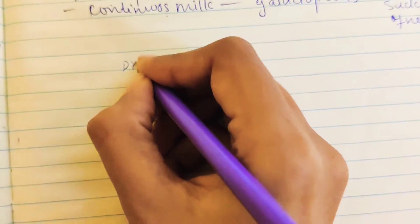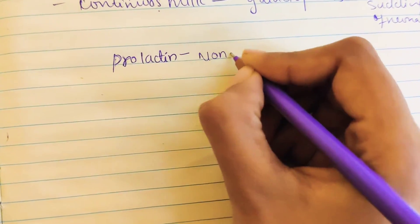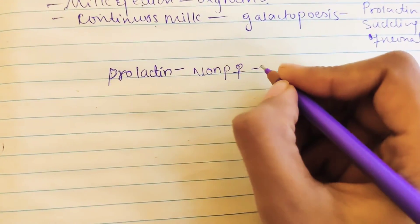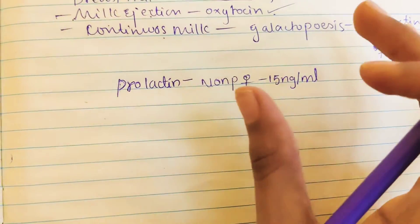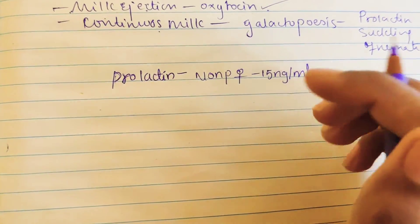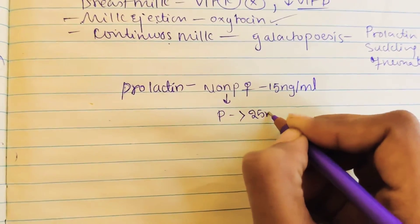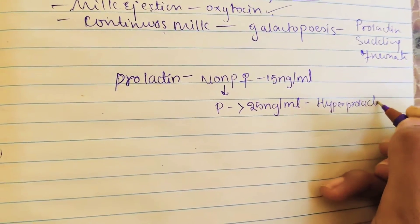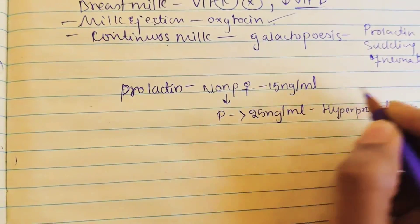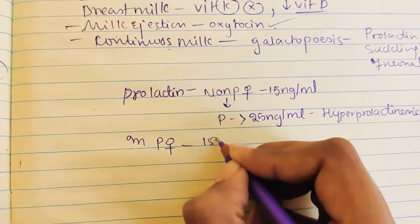Let us continue our discussion with prolactin in pregnancy. In a non-pregnant female, the normal value of prolactin is 15 nanogram per milliliter. If the prolactin value is greater than 25 nanogram per milliliter in a non-pregnant female, then it is called hyperprolactinemia.